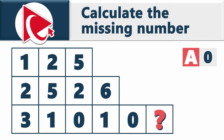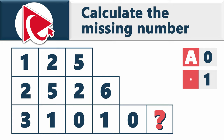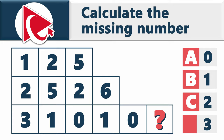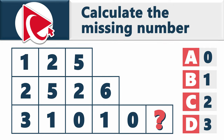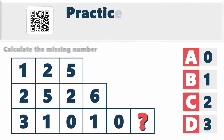Choice A: 0. Choice B: 1. Choice C: 2. And last but not least, choice D: 3. If you think it looks confusing, you are not alone.